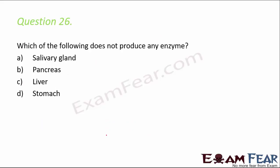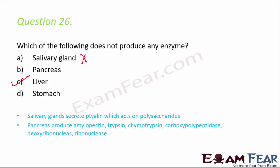Question number 26: which of the following does not produce an enzyme? Salivary glands produce salivary amylase. The pancreas produces pancreatic enzymes including trypsin, chymotrypsin, and amylopeptin, which help in digestion of proteins and lipids. The liver produces bile juice, but bile is not an enzyme — therefore liver is the correct answer.